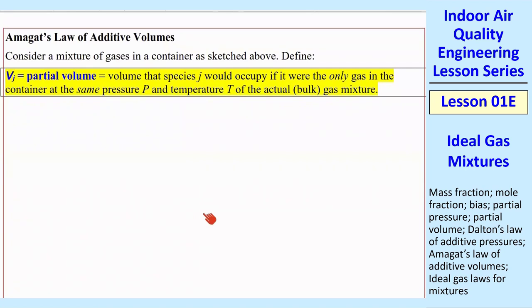I want to talk about Amagat's Law of Additive Volumes. So here's the definition. Again, we have a mixture of gases in a container like we sketched. And Amagat's Law says that the partial volume, Vj, again, I use that symbol in my notation when I write with pencil or pen. It's Vj with a bar. But in my typed notes, I use this Arial font instead of the Times Roman to distinguish this V from this V for volume. So you'll see that I do that consistently, hopefully. What is partial volume? It's the volume that species J would occupy if it were the only gas in the container at the same pressure and temperature of the actual bulk gas.